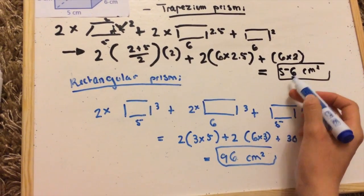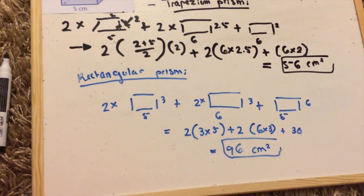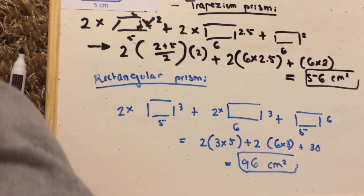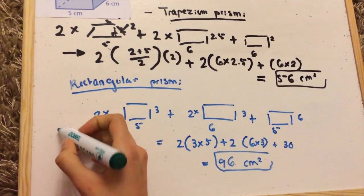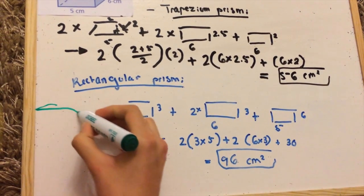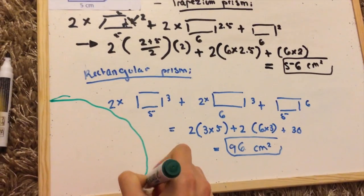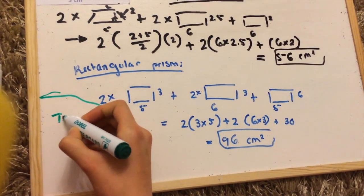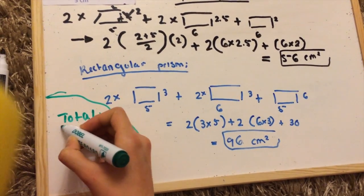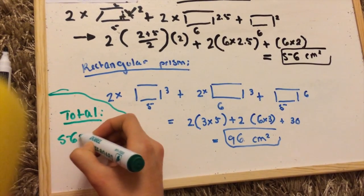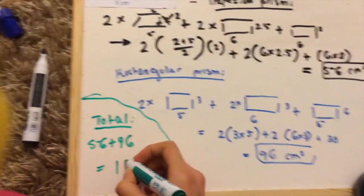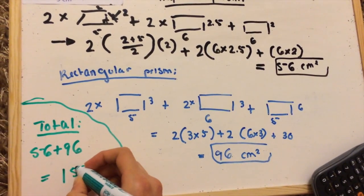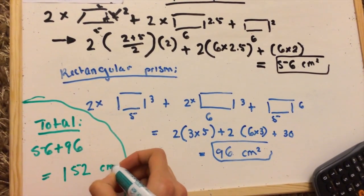Now I'm going to go to the corner here and add this and this over here. I'm going to use my green marker, and I'm going to write total because this is the total surface area. So you add 56 to 96, and your answer is 152 centimeters squared. Alright.